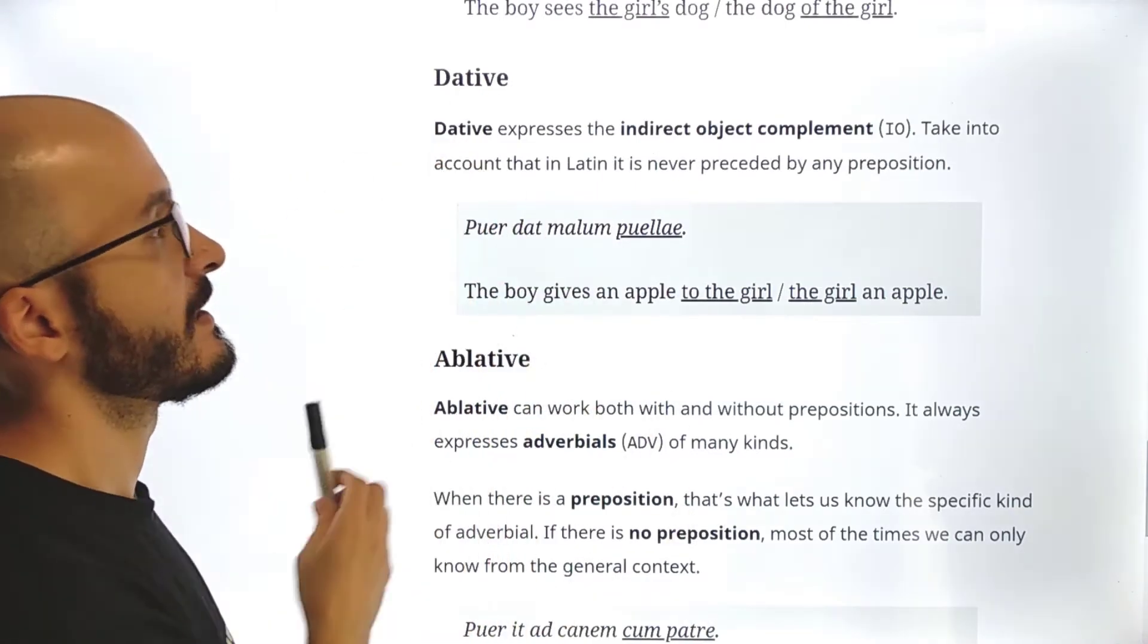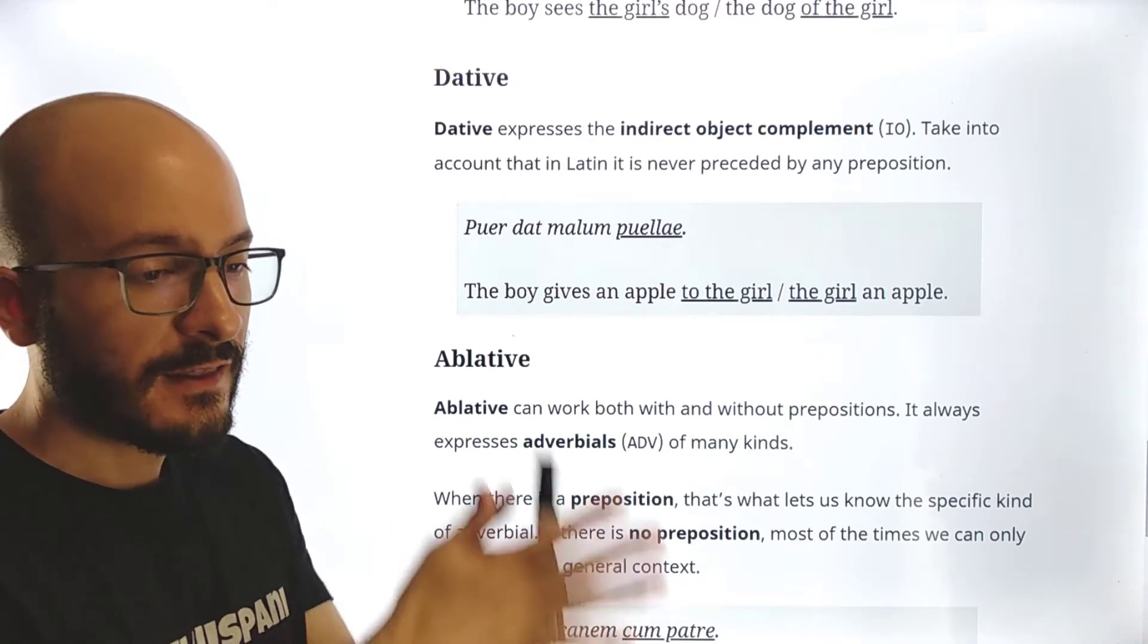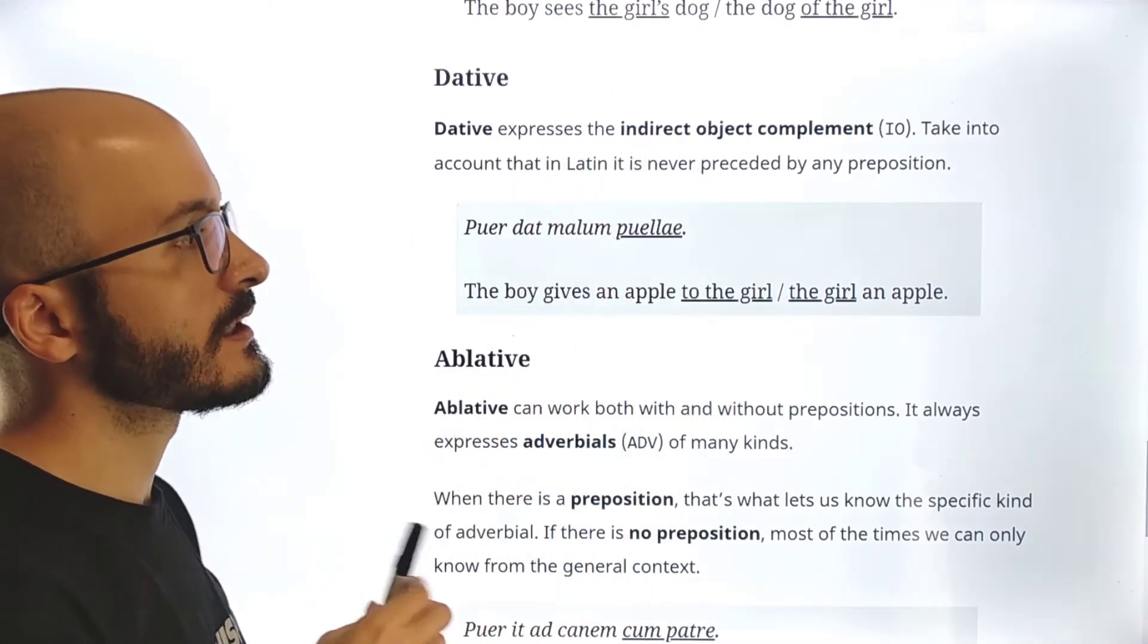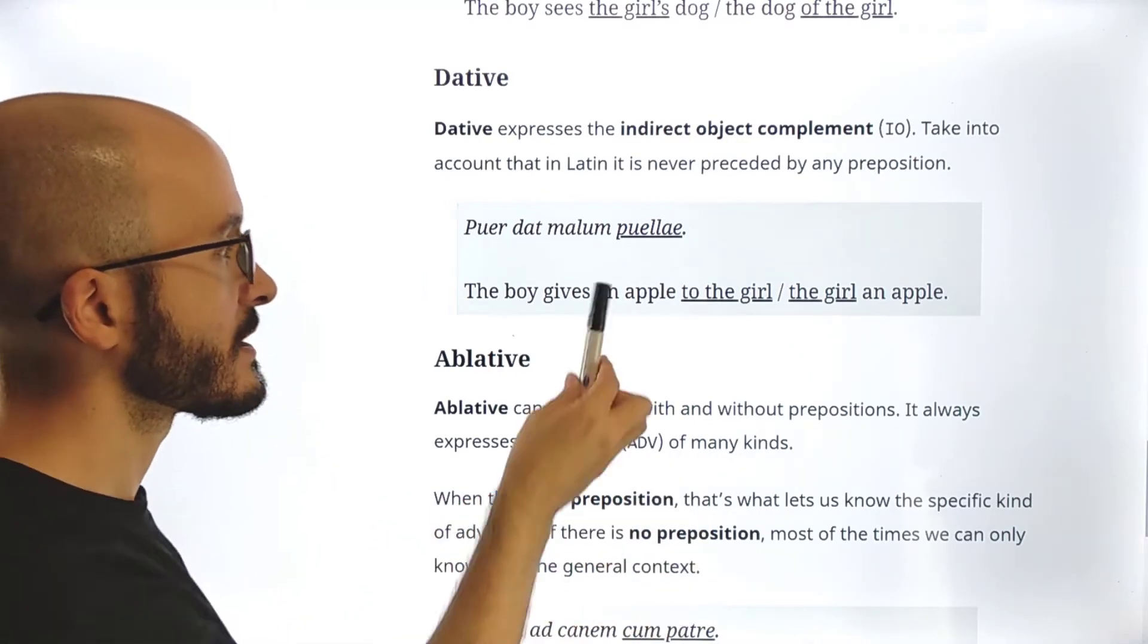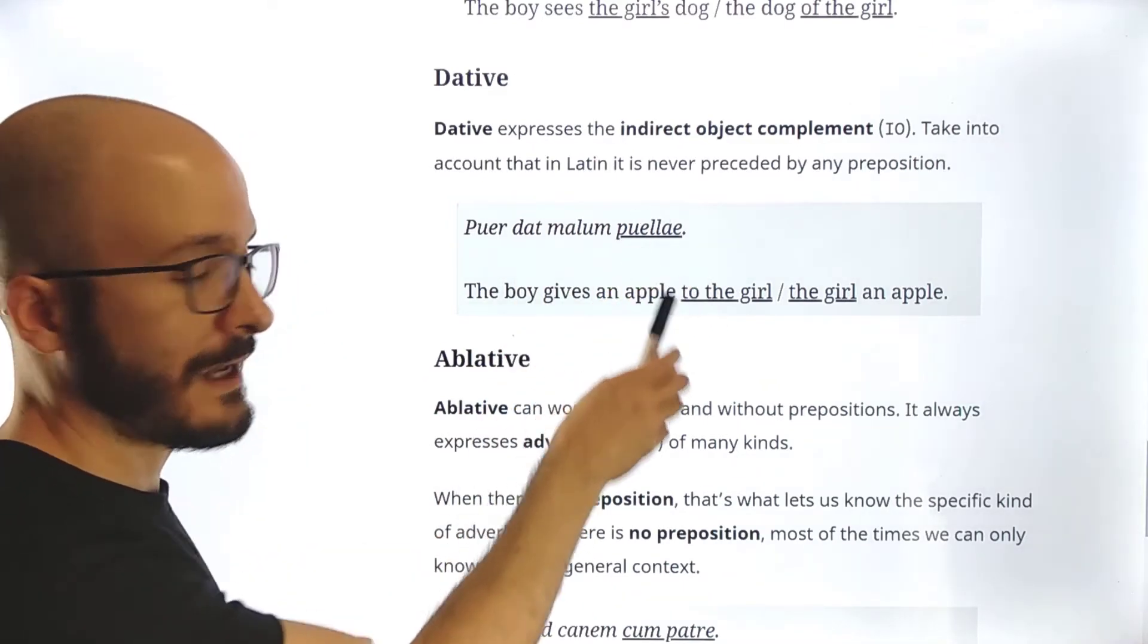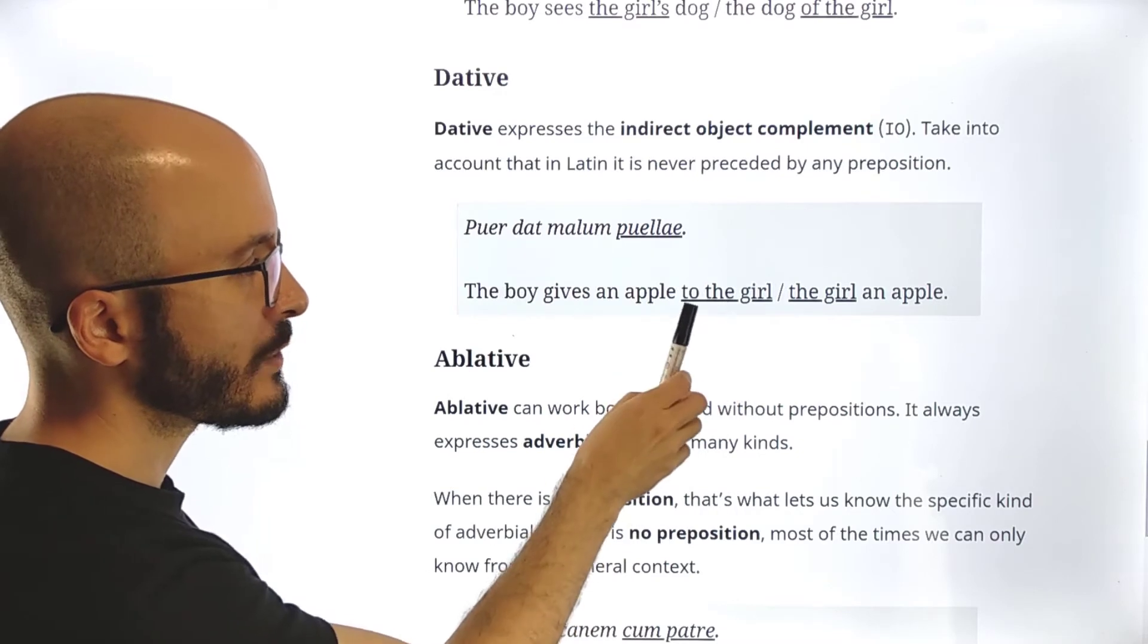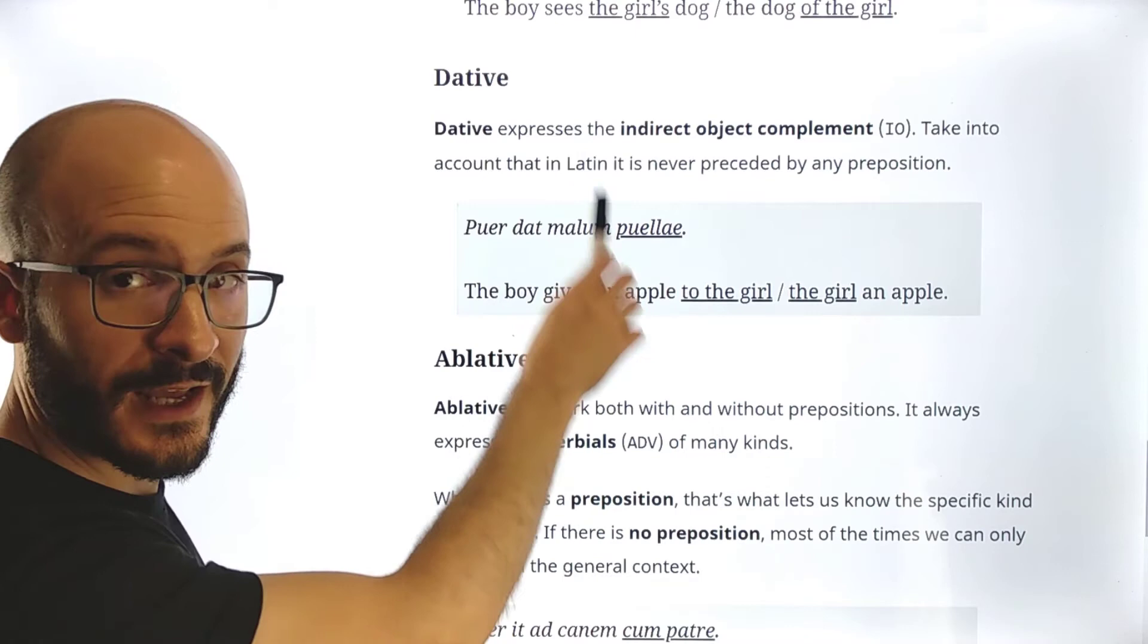The fifth case is the dative, which expresses the indirect object. Remember that accusative is direct. Dative is indirect. Take into account that in Latin it is never preceded by any preposition, because in English it can work in a different way. So for example, we say puer dat malum puellae. So puellae, as we know, it's a dative, can be dated. So the boy gives an apple to the girl.